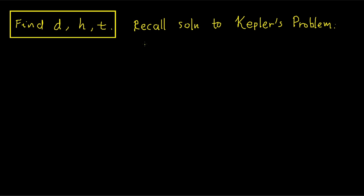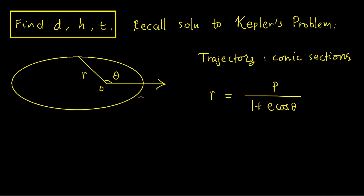To solve the problem, let's first recall the solution to Kepler's problem, derived in a previous video (link in the video description). The solution says that flight trajectories are conic sections, whose polar equation is r = p / (1 + e·cos θ). The origin is at the center of the force field, r is the distance between the projectile and O, and the polar angle θ is measured from the perihelion — the point on the trajectory closest to the origin.